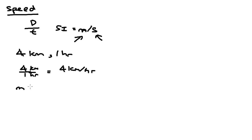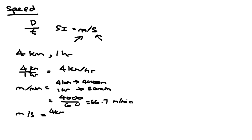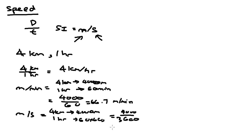What if you want to find it in terms of meters per minute? You know that 4 kilometers equals 4000 meters, and 1 hour equals 60 minutes. So to find it in meters per minute, take 4000 divided by 60, which gives you 66.7 meters per minute. And if you want it in SI units, which is meters per second, we know 4 km is 4000 meters and 1 hour is 60 times 60 seconds, so you divide 4000 by 3600 and get the speed in meters per second.